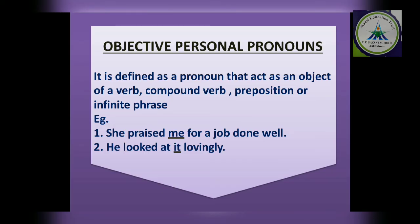The second type is the objective personal pronoun. The pronoun that acts as an object in the sentence becomes an object personal pronoun. It is defined as a pronoun that acts as an object of a verb, compound verb, preposition, or infinitive phrase. For example: 'She praised me for a job done well.' Here 'she' is the subject — subject personal pronoun — and 'me' is acting as the object, so 'me' becomes an object personal pronoun.